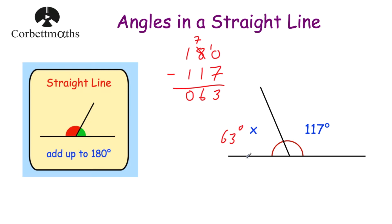We can check our answer: if we take 117 and add 63, that's equal to 180 degrees. So the angles in a straight line add together to be 180 degrees.